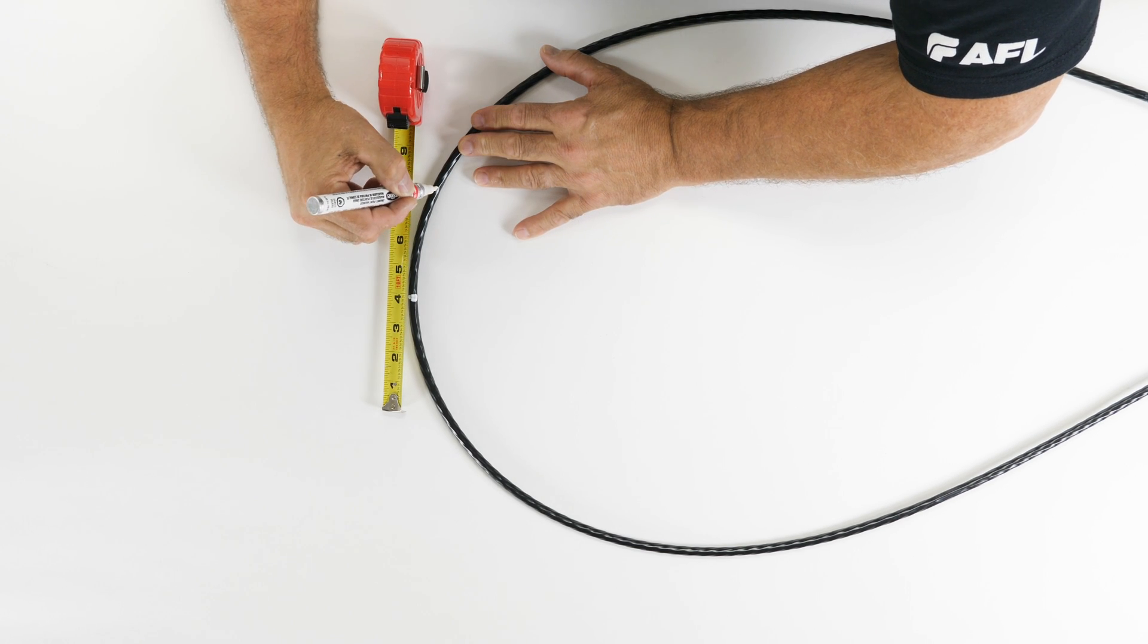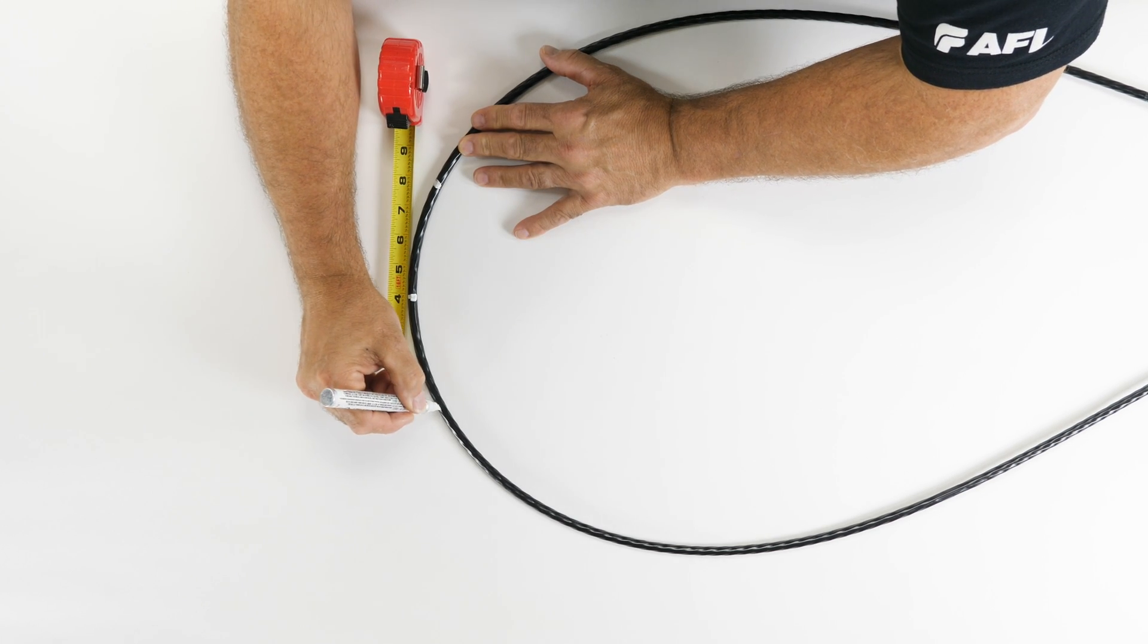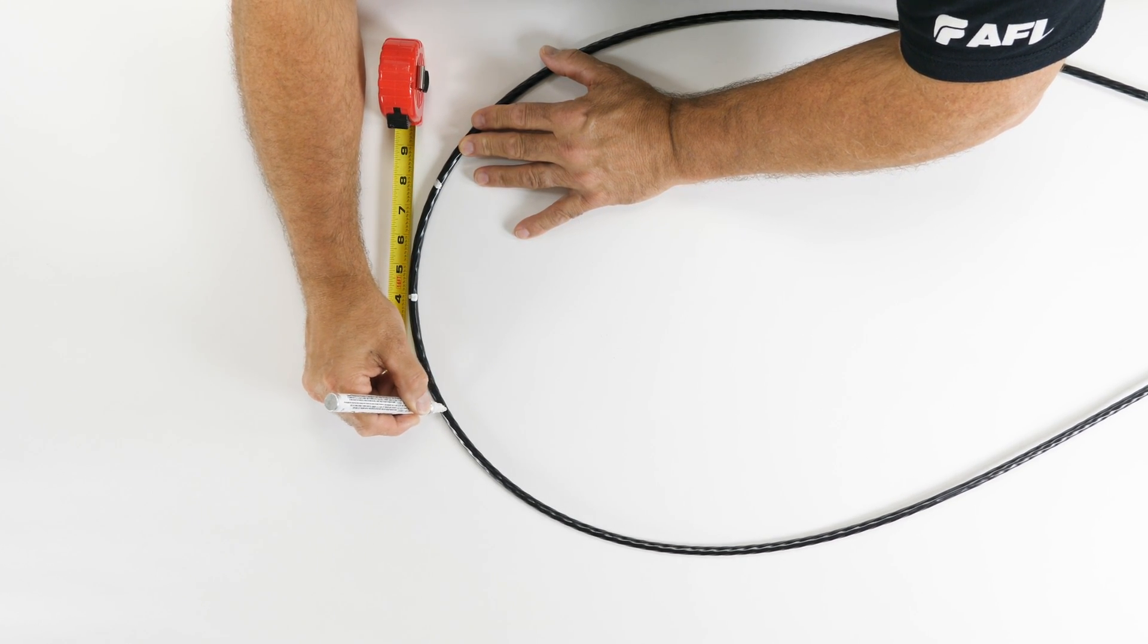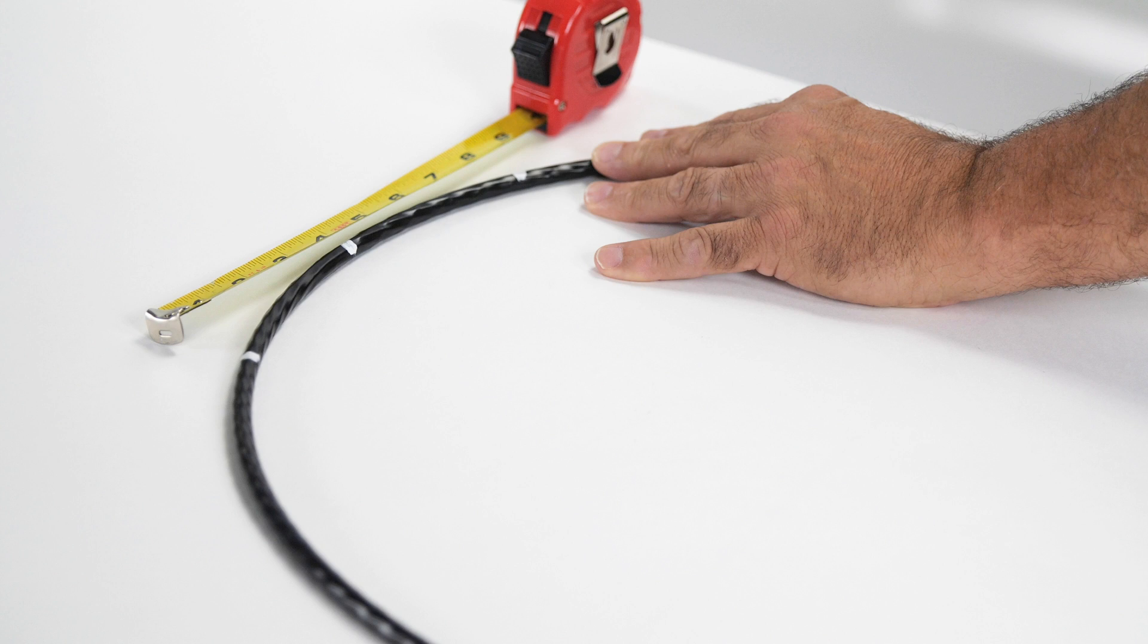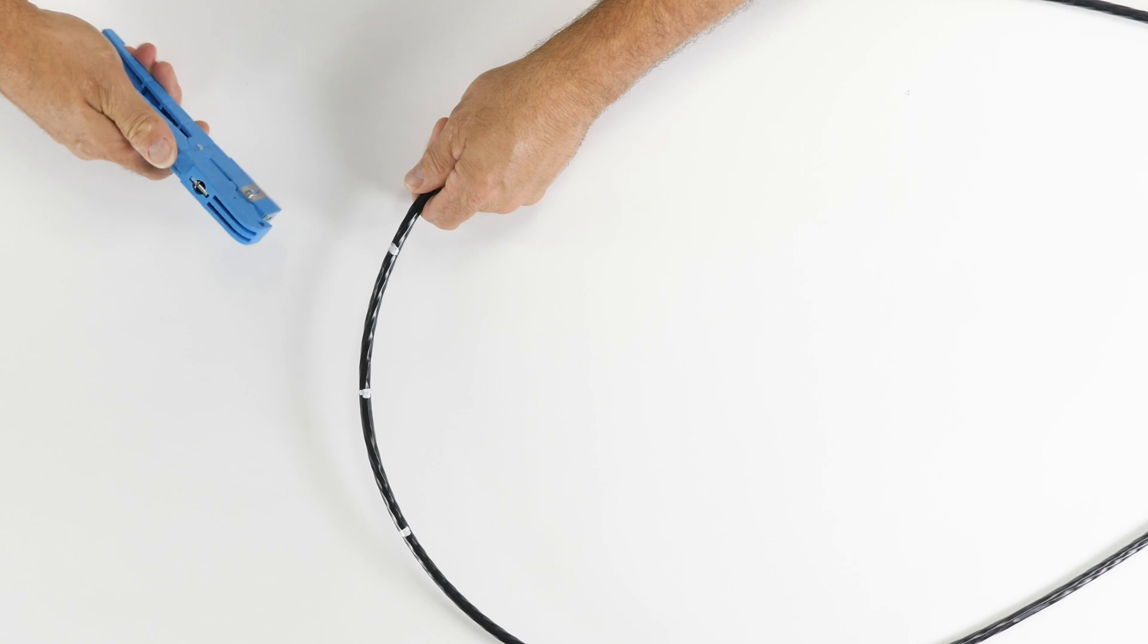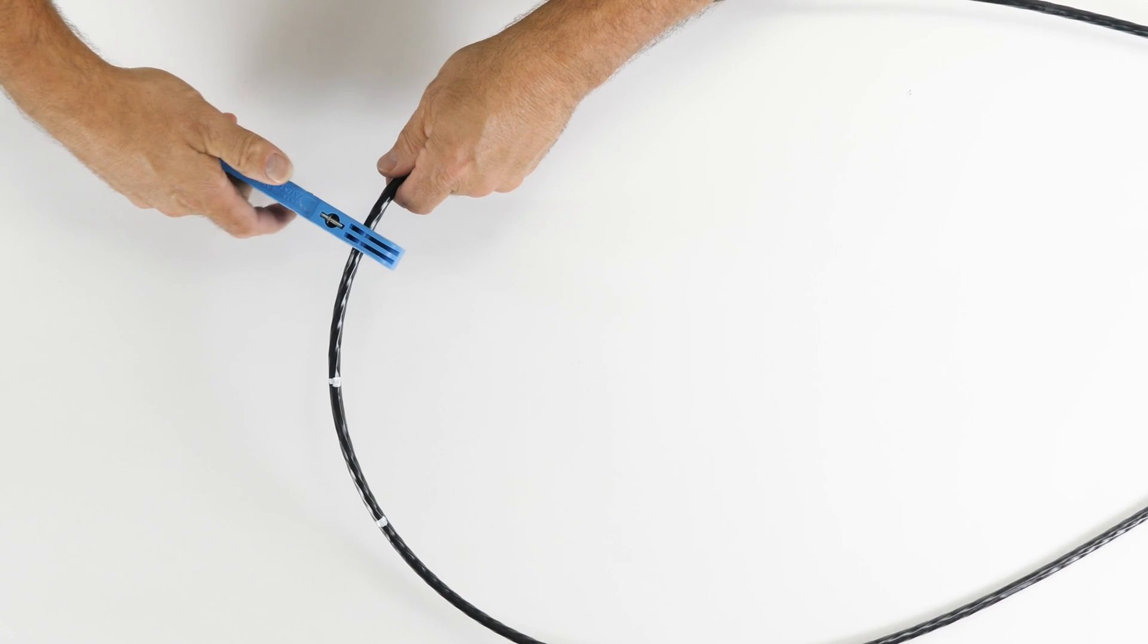From the paint mark at the center of the loop, measure and mark the cable jacket at approximately 4 inches in each side of the loop. This location will become a mid-sheath window, which will allow the buffer tubes to be accessed. Using the cable ring cutter, score the jacket surface at each of the 4-inch locations.